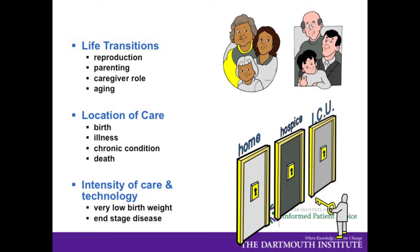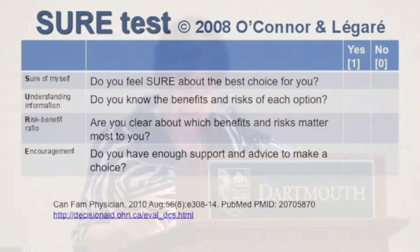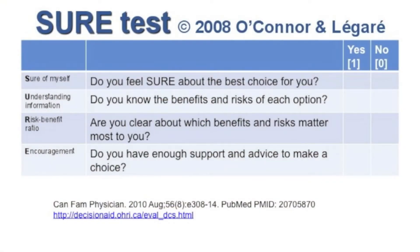It could also be aging, education, relocation, retirement — those big life decisions that many of us face. Location of care at the time of birth, illness, chronic condition, or death, and intensity of care and technology if you have someone with very low birth weight or end-stage disease. Think about this big decision that you or someone you know is facing.